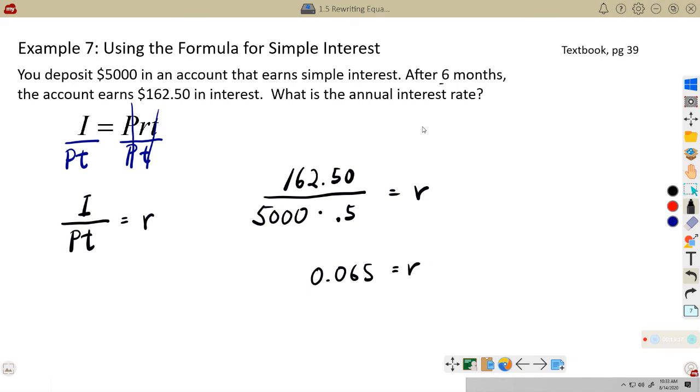Now, the thing about this, interest rates are in percents. So the percentage would be 6.5%. And that's how we would answer this question. So this is a good example of where the answer to our equation is not necessarily the answer to the question. Annual interest rate is in percents. This is a decimal form of the percent. So we have to do that one last conversion step in order to answer the question.